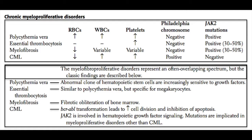There's essential thrombocytosis, which is similar to polycythemia vera, but here you have uncontrolled production of platelets — megakaryocytes producing too many platelets. Then there's myelofibrosis, which is essentially a fibrotic obliteration of the bone marrow. Because the entire bone marrow gets replaced by fibrosis, all of the different cell lines are going to be decreased, and you often see a pancytopenia. Lastly, there's CML — chronic myelogenous leukemia — which is secondary to the BCR-ABL fusion protein, or the Philadelphia chromosome.